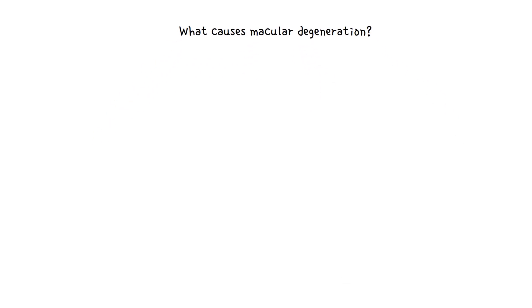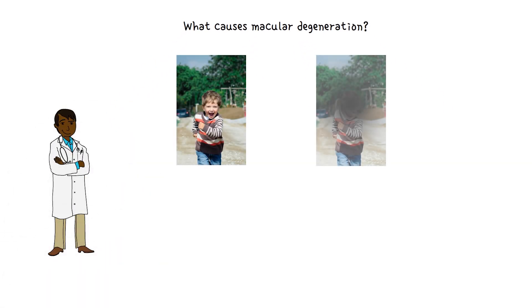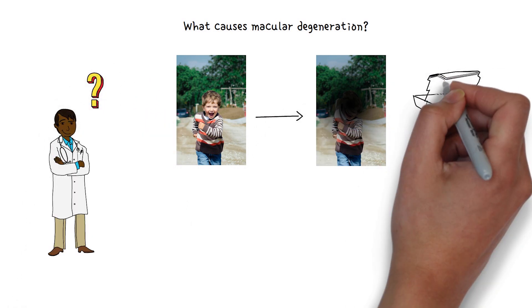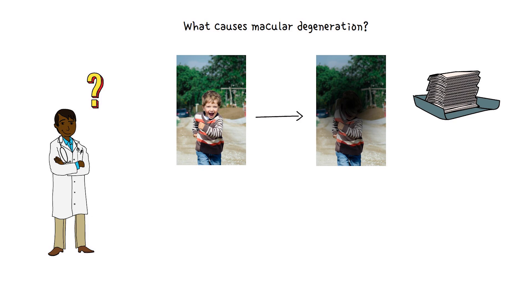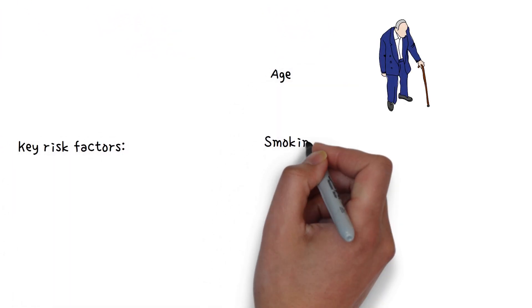What causes macular degeneration? The specific factors that cause macular degeneration are not conclusively known, and research into this little understood disease is limited by insufficient funding. Key risk factors are age, smoking, and family history.